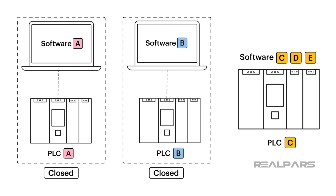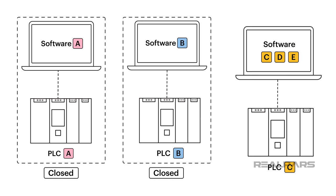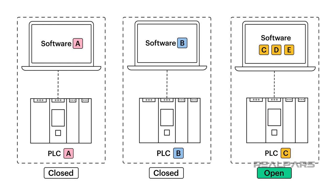But things are different for PLC C. Unlike the other two PLCs, this PLC can be programmed with Software C, but it can also be programmed with Software D and Software E. This is what we call an Open PLC — a new type of PLC that is not limited to only one programming software and can also be programmed by some other programming software as well.